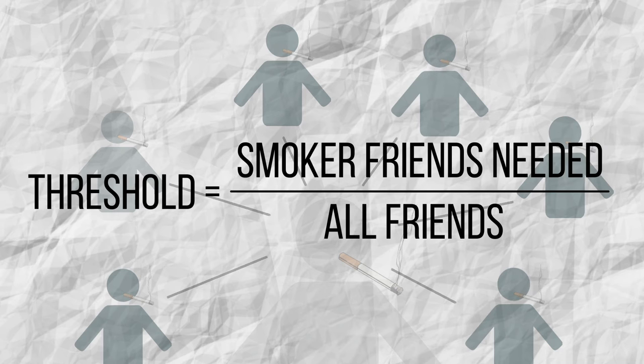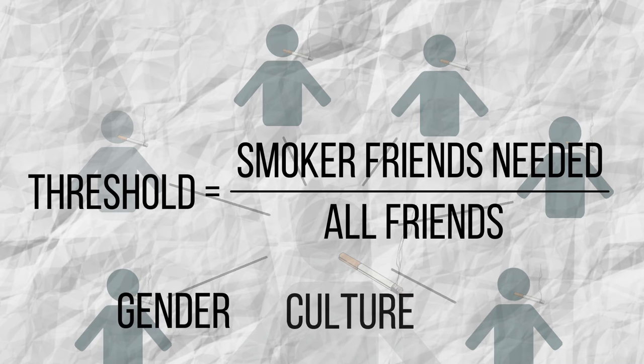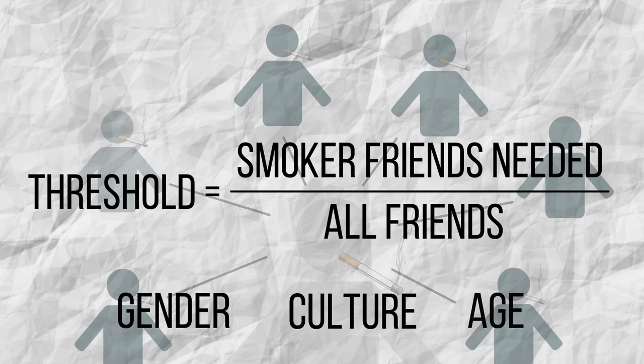This can vary depending on many factors, such as gender, culture, or age. For example, young people have a lower threshold as they are more susceptible to influence.